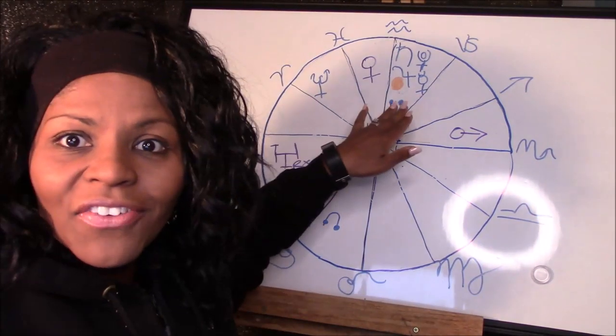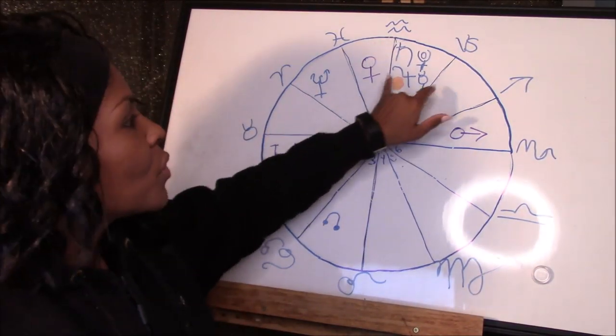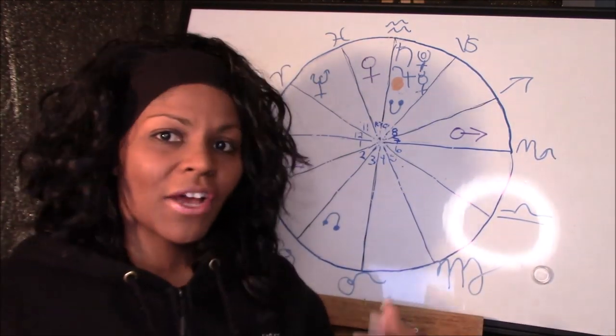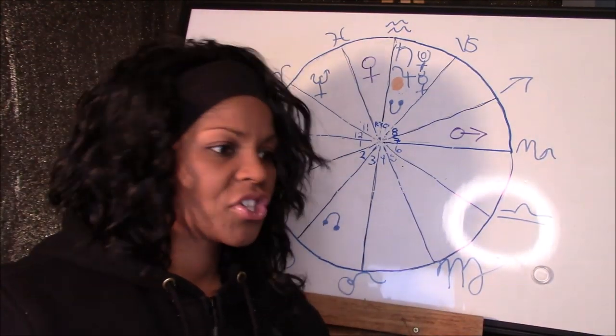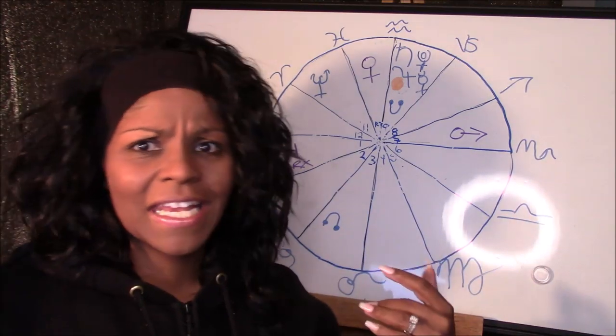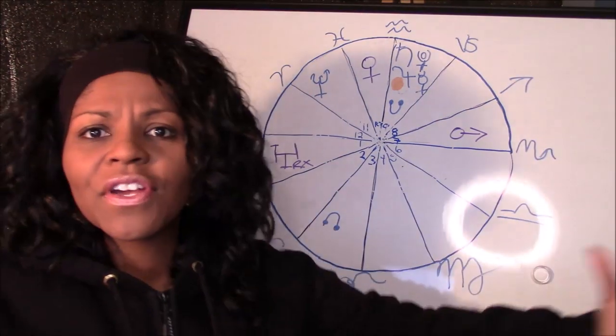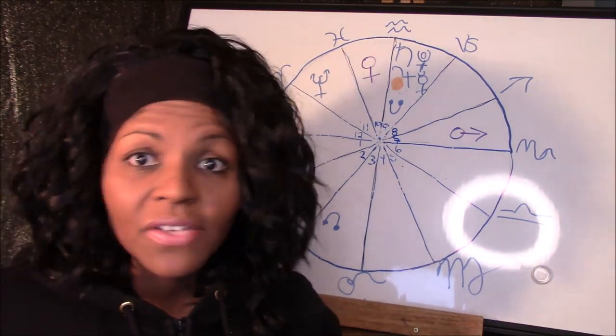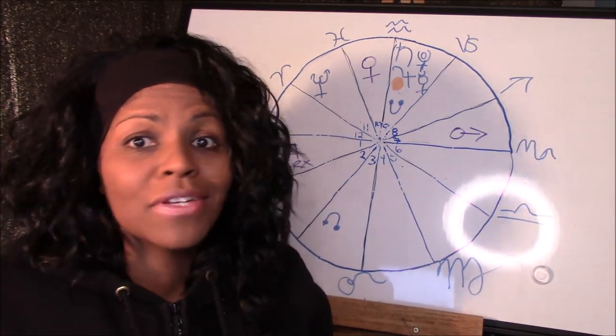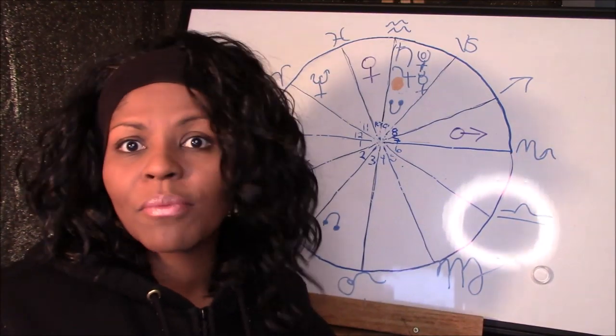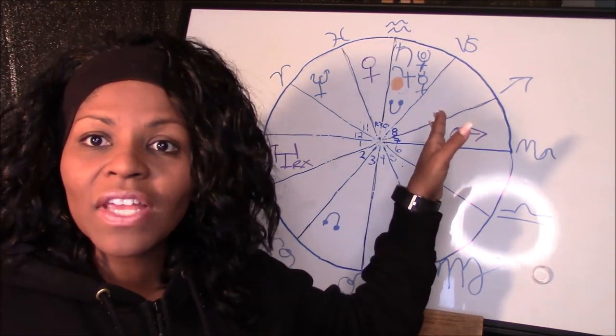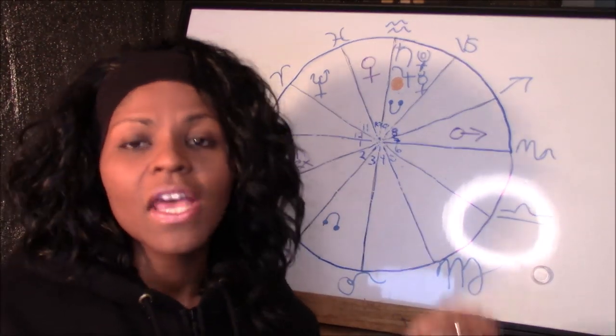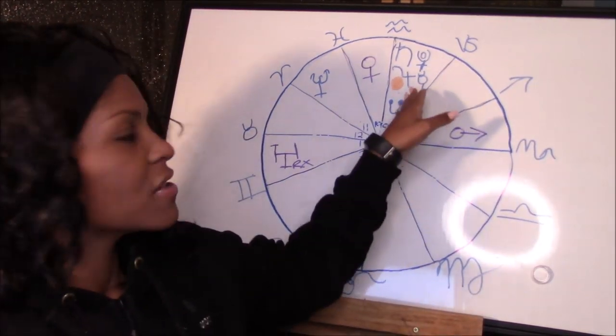And so we start off in January on the 2nd with Mercury and Jupiter being in a conjunction up here in this ninth house. Now the ninth house is all about publishing, broadcasting, marketing, getting yourself out there, expanding in some way, shape, or form. It's about faith, your philosophies, beliefs, and ideas around life, religion, ceremony, tradition. It's also a wonderful house of international business, travel, law, all of these kinds of things will end up falling into this ninth house place.